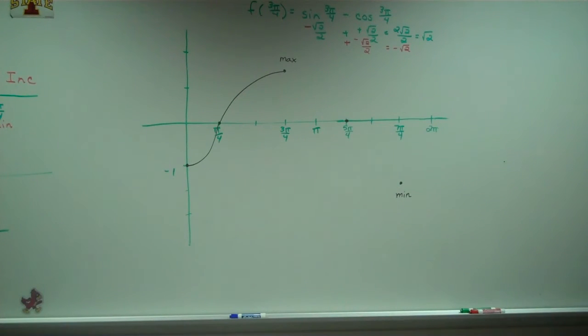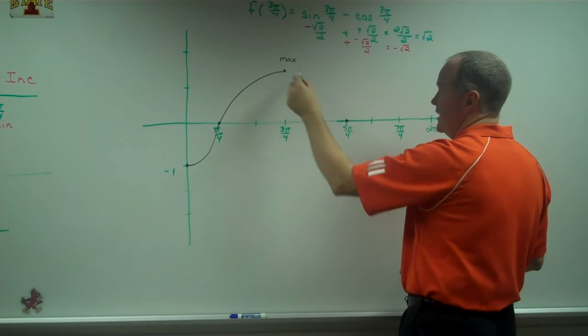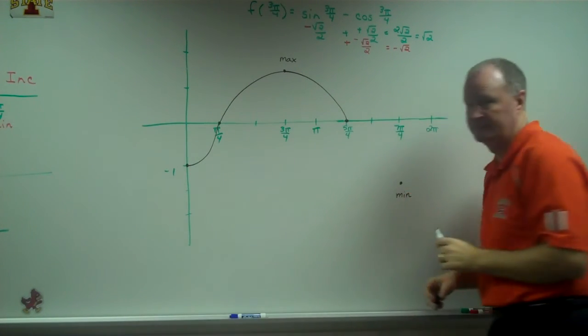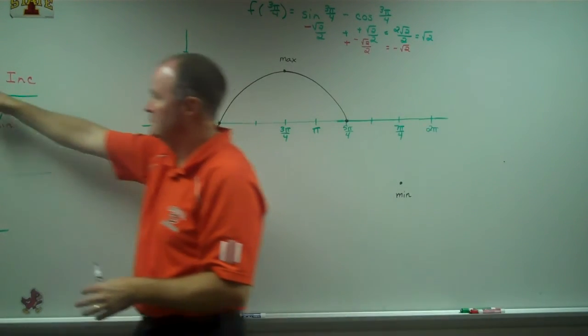From 3π over 4 to 5π over 4, from here to here, decreasing now and concave down. I'm getting all that stuff from the chart, right here.